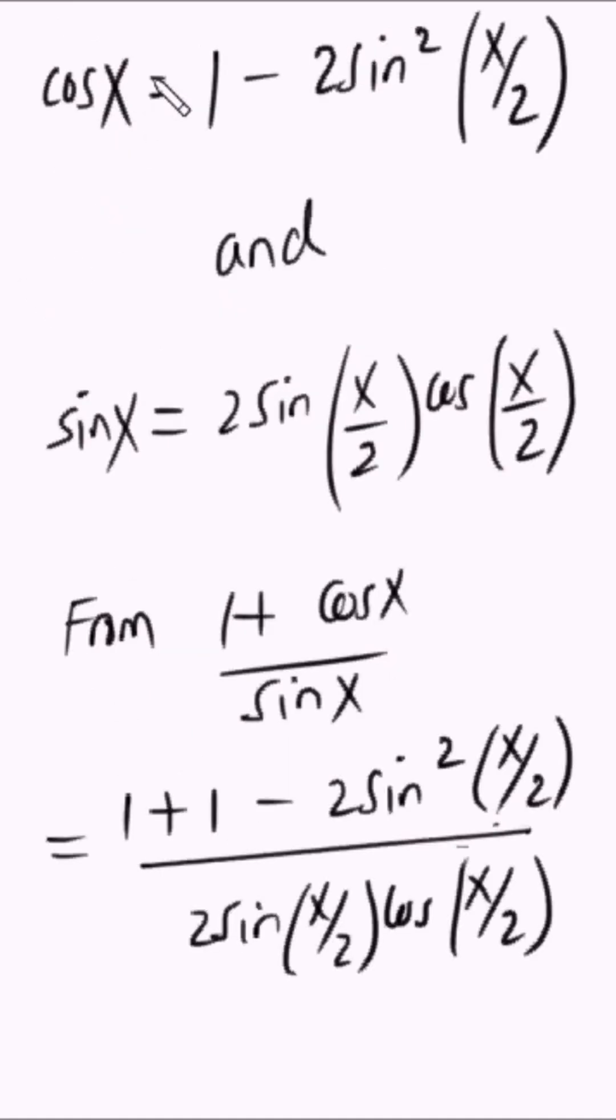But cosx is 1 minus 2 sin squared of x over 2. You use that concept of multiple angles and compound angles to derive this.